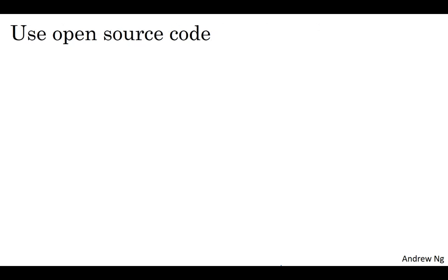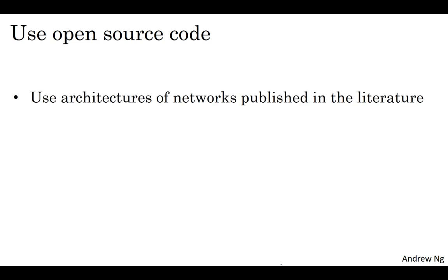Because a lot of computer vision problems are in a small data regime, others have done a lot of hand engineering of the network architectures. And a neural network that works well on one vision problem often, maybe surprisingly, but just often will work on other vision problems as well.